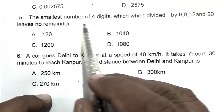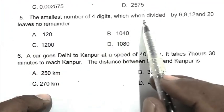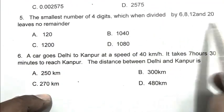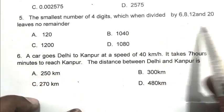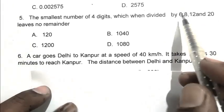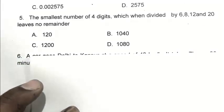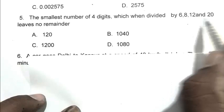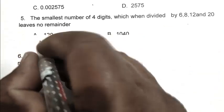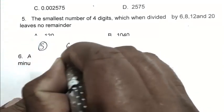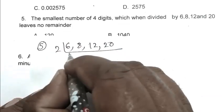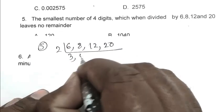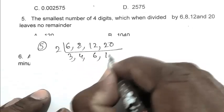Question number 5. The smallest number of 4 digits which when divided by 6, 8, 12 and 20 leaves no remainder. The number which is divisible by 6, 8, 12 and 20 is the LCM of these numbers. So first we calculate the LCM of 6, 8, 12 and 20. We divide: 2 gives 3, 4, 6, 10.